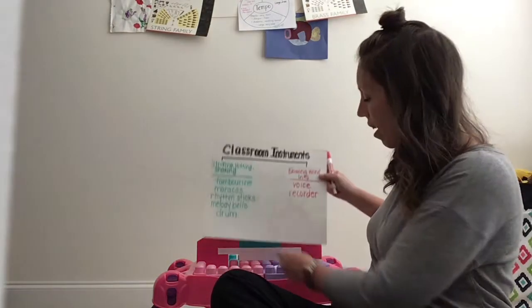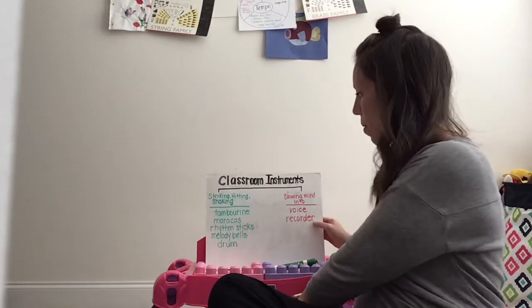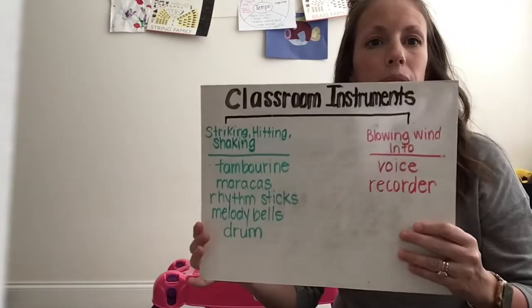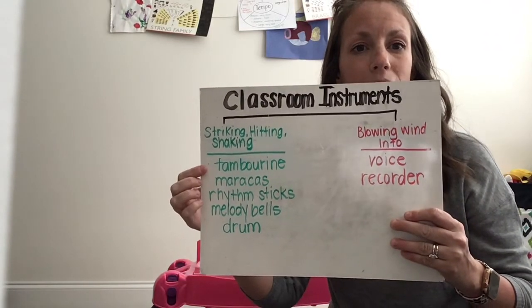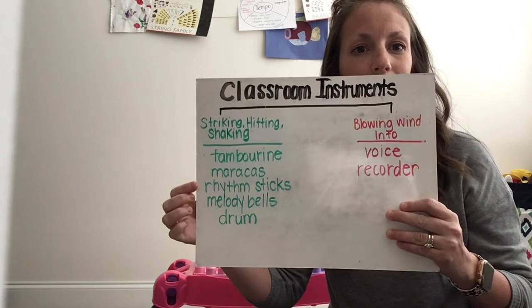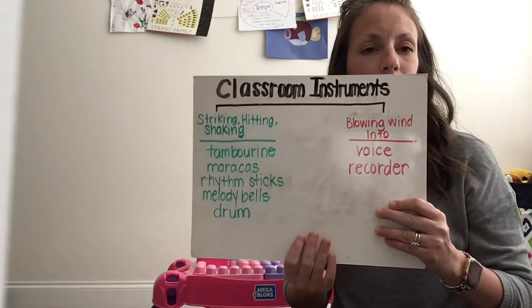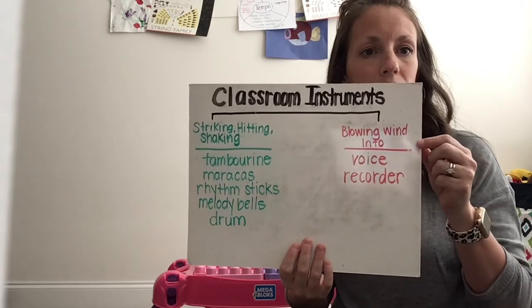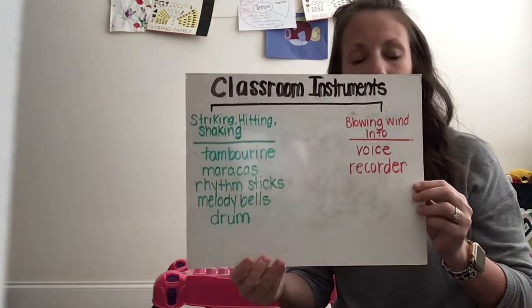So let's take a look at our finished tree map. Let me bring it closer to you. So striking, hitting, shaking, we have our tambourine, maracas, rhythm sticks, melody bells, and drum. And blowing wind into, we have our voice and recorder. So what do you notice about this?